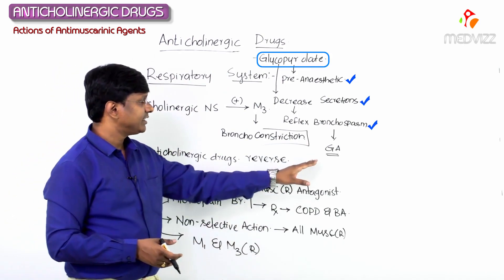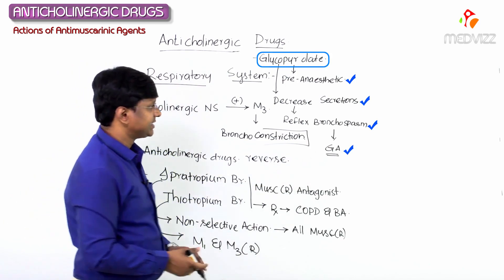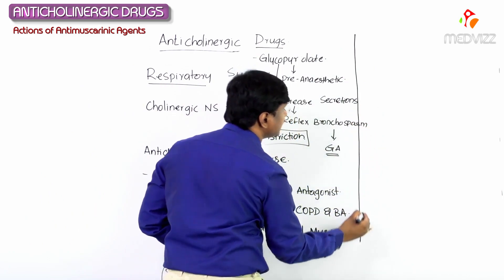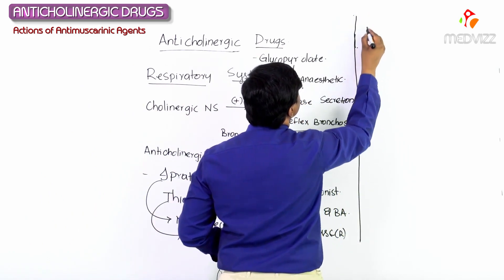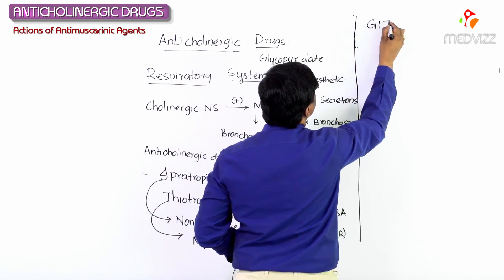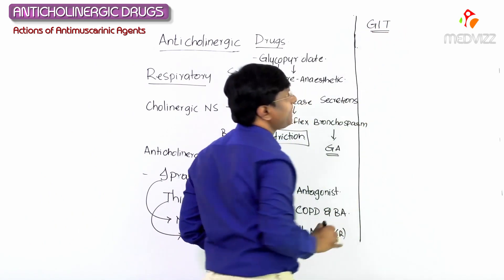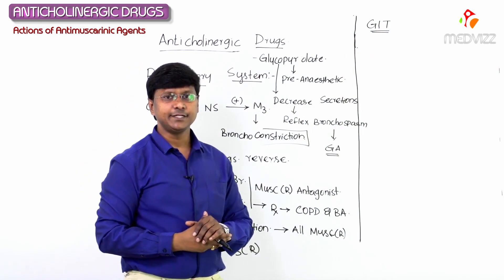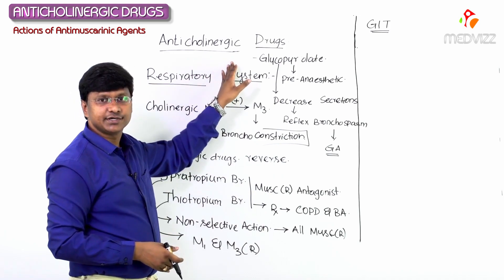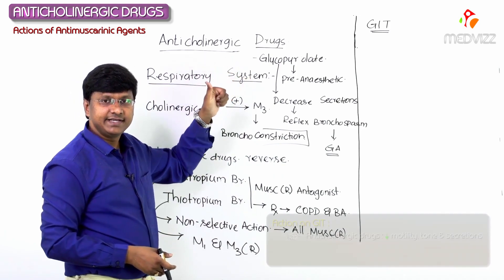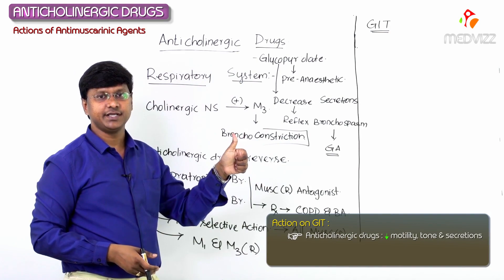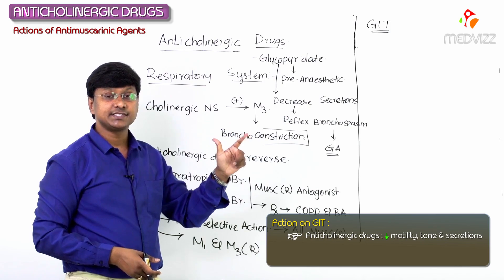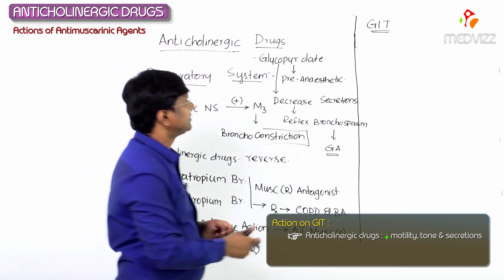Glycopyrrolate is used as pre-anesthetic medication mainly to decrease secretions and reflex bronchospasm during general anesthesia. Next, let me discuss the effects of anticholinergic drugs in the GIT. These anticholinergic drugs will decrease the motility of the GIT and decrease the tone in the GIT, and also decrease secretions within the gastrointestinal tract.